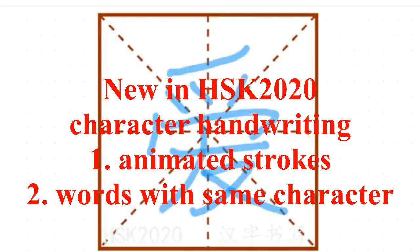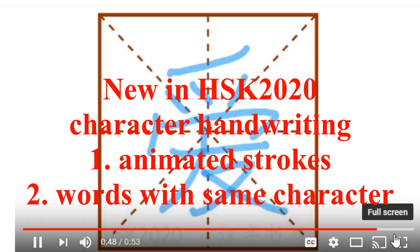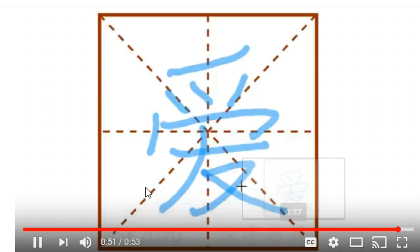For example, 我爱你, I love you. 你爱我吗? Do you love me? And vocab such as 爱好, my hobby. 爱情, love. 爱护, meaning protect. Okay, that's the character for 爱.